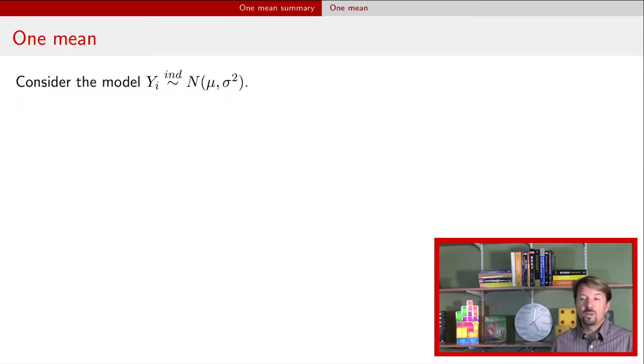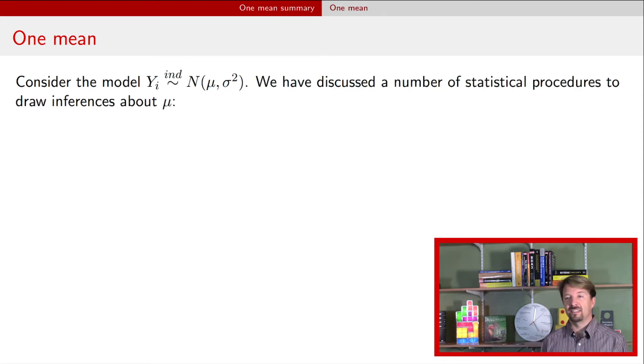Okay, so we have a model. This is a model that we've talked about quite a bit before. It's a model for a single group but multiple observations from that group. You assume that they're independent, they're normally distributed, a mean that is mu and a variance that's sigma squared. And we talked about a whole number of statistical techniques that you can use to make statements in particular about the normal mean.